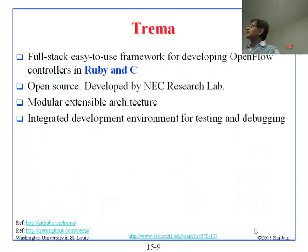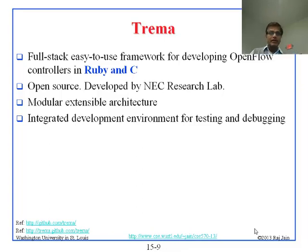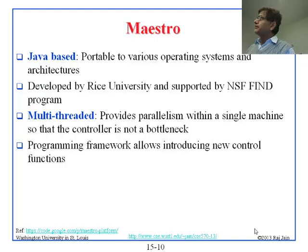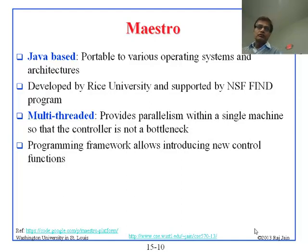There is a controller called Trema, developed by NEC Research Lab in Japan, implemented in Ruby and C. The features are not very different from the others; mostly the language differs, and it is modular and extensible. Maestro is another Java-based controller, developed by Rice University and supported by NSF. The key thing about Maestro is that it allows parallelism by having multiple threads running in parallel, so the controller is not a bottleneck. Two things to know about Maestro: Java-based and multi-threaded.